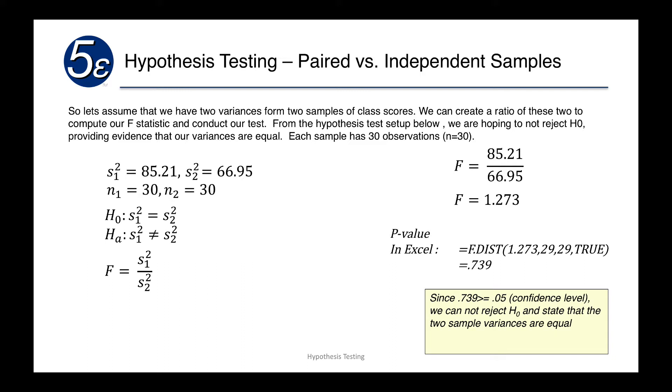We do a TRUE, and we end up with 0.739. Since 0.739 is greater than 0.05, we cannot reject the null hypothesis, and we can therefore state that the sample variances are equal.